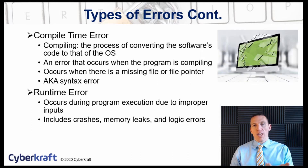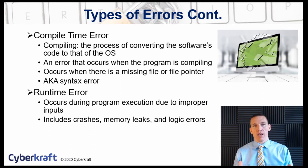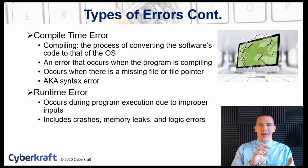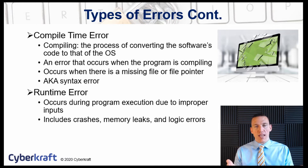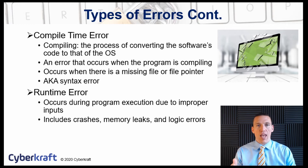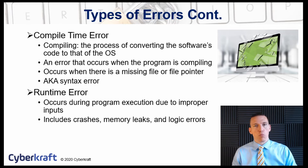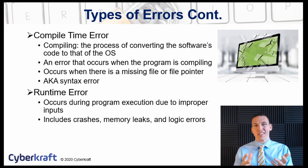A compile time error occurs when the software is compiled. Compiling is a process of converting the software's code into something that's usable by the operating system. A compile time error occurs when the program is compiling. This can often happen if there's a missing file or an incorrect file pointer. A file pointer is missing certain information — it points to an area that has no information. This is also known as a syntax error.